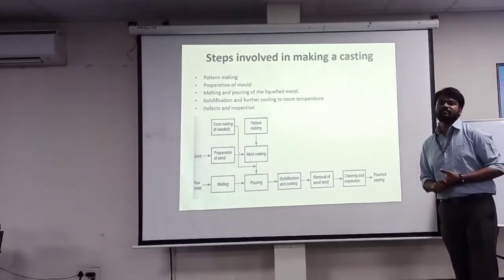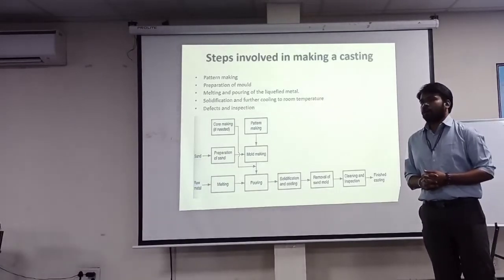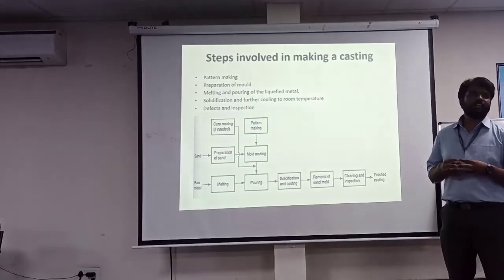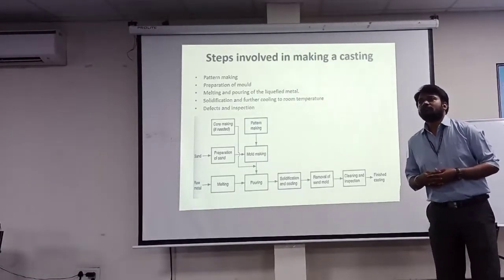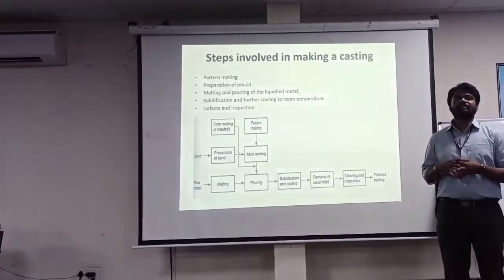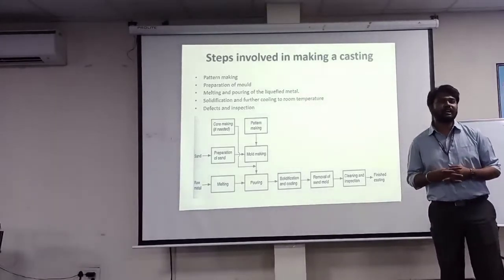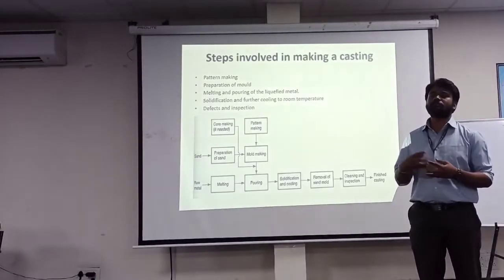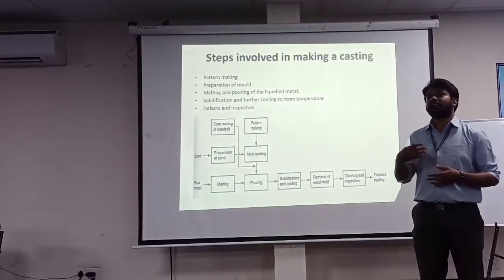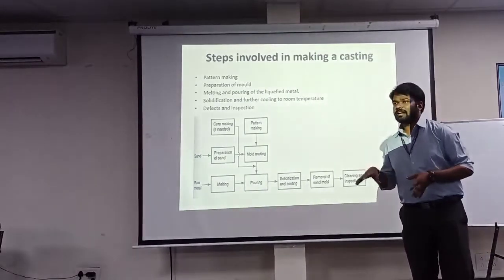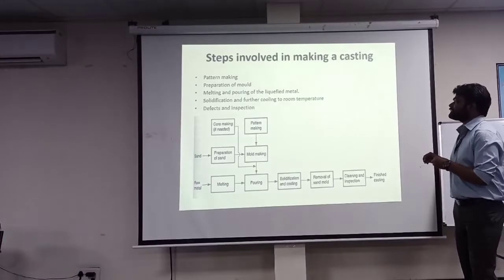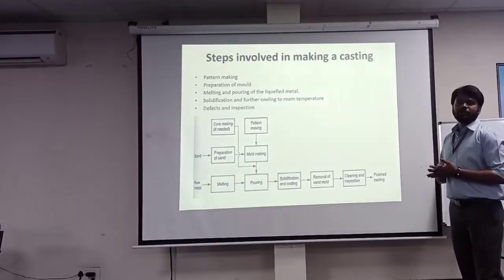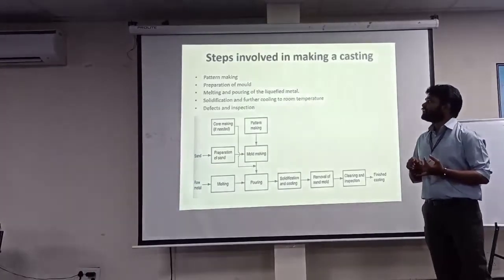Looking at the steps involved in casting, there are basically five steps. The first one is the preparation of the pattern, also called pattern making. Pattern is nothing but a negative. Just as in olden-day photography, the photographer gives us a negative with which we can take as many prints as we want — similarly in casting, the pattern is a negative. With the help of the pattern, we can manufacture a number of components by placing that pattern into a mold.